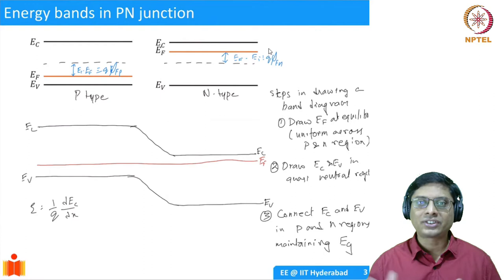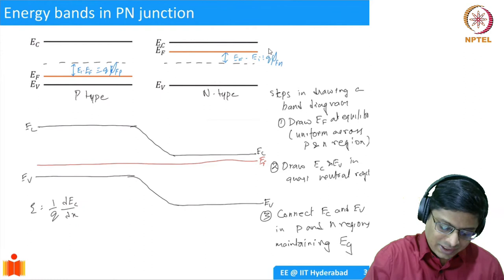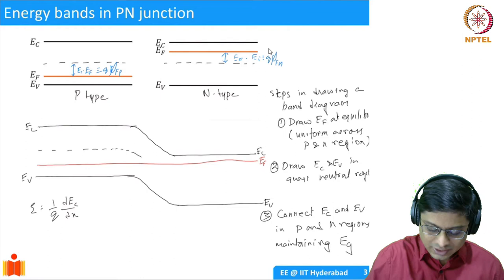Step 3: Connect Ec and Ev in the p and n regions maintaining Eg. That's it — you have your band diagram. You can also put in Ei, which is exactly in between Ec and Ev.